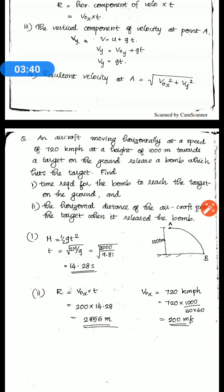Next problem: an aircraft moving horizontally at a speed of 120 km per hour at a height of 1000 meters towards a target on the ground releases a bomb which hits the target. Find the time required for the bomb to reach the target on the ground, and second, the horizontal distance of the aircraft from the target when it released the bomb.